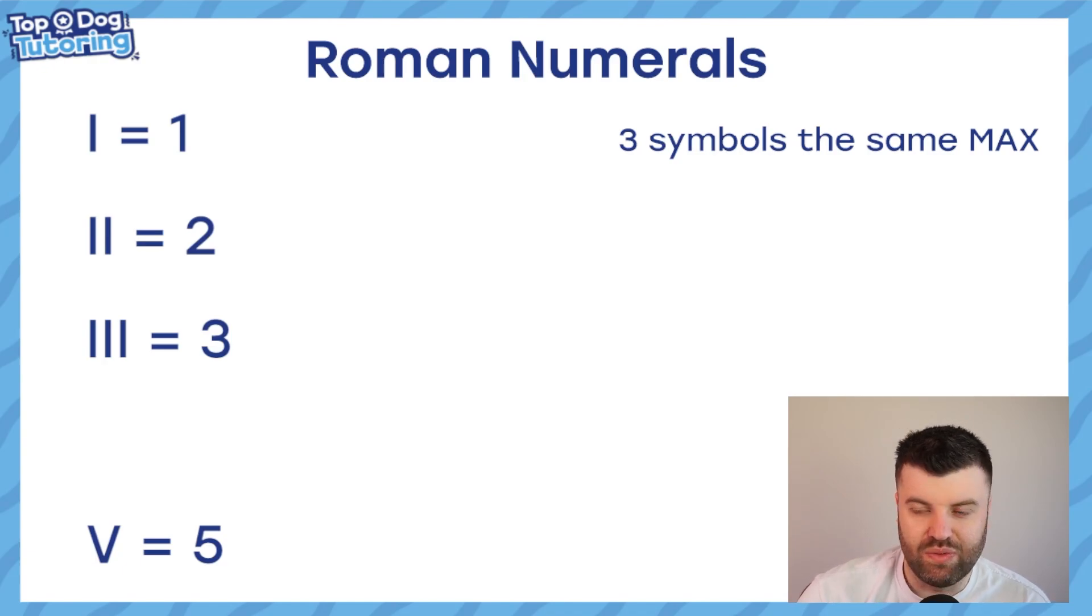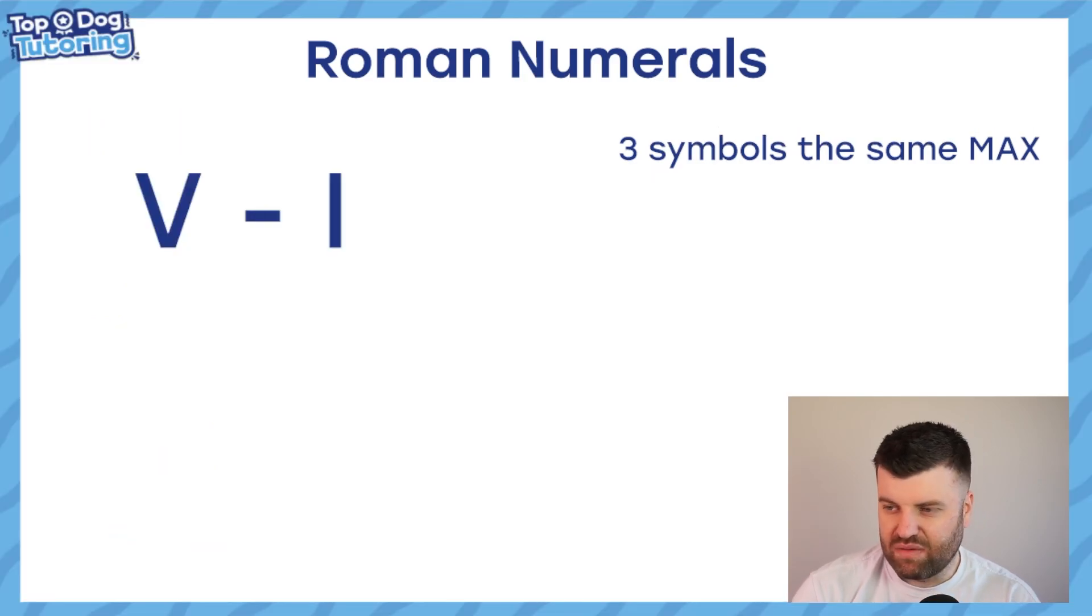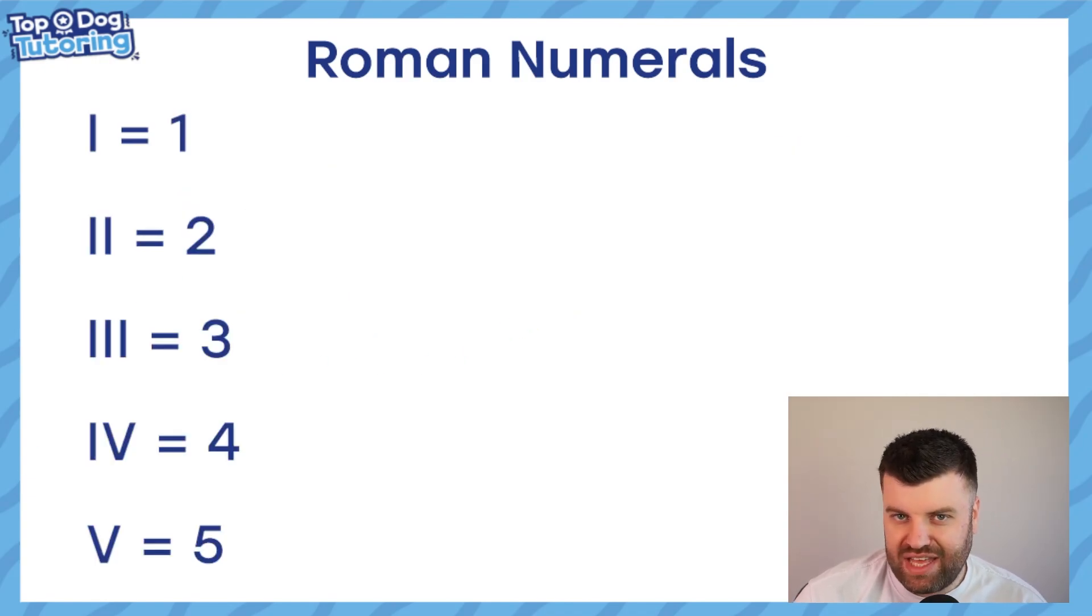We're going to go through all the I's until we get down to 5. So the next one, 4, is IIII, right? Wrong. There's our first rule for Roman numerals. If we have any number of symbols in a row that are the same, it cannot go past 3. So this is the maximum number of I's we can have in a row. But that leaves us with a slight problem. We need to figure out what 4 would be.